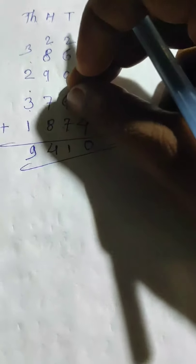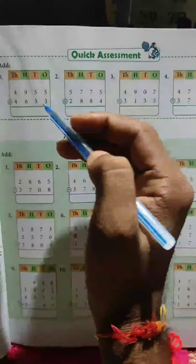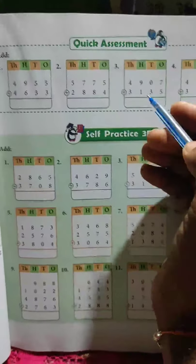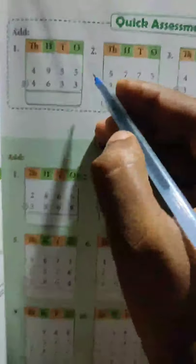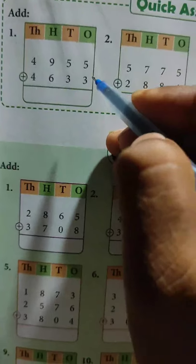Addition of more than two numbers is done this way. After that there is a quick assessment here. There are four examples here which we will solve.